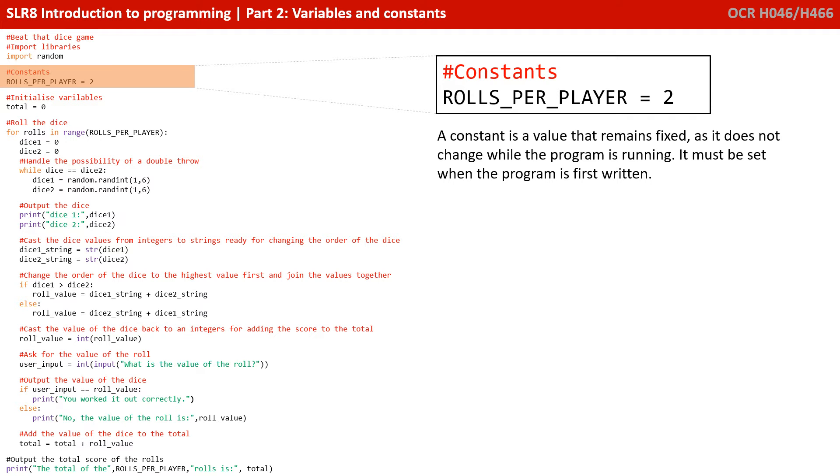Here we see an example of a constant, roles per player equals 2, and it looks exactly the same as our variable in Python. Now a constant is a value which remains fixed and does not change while the program is running, so we must set it at design time when the program is first written. Now the reason it looks identical here to the previous line of code we looked at is that Python doesn't actually support constants.